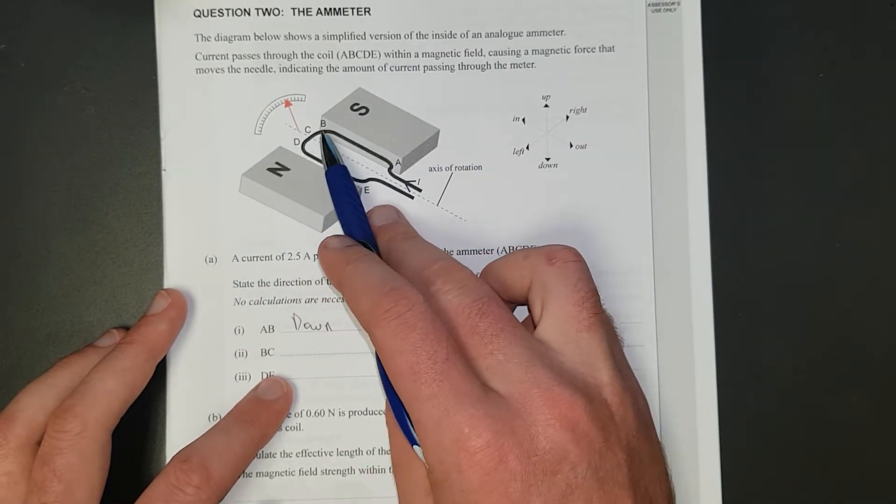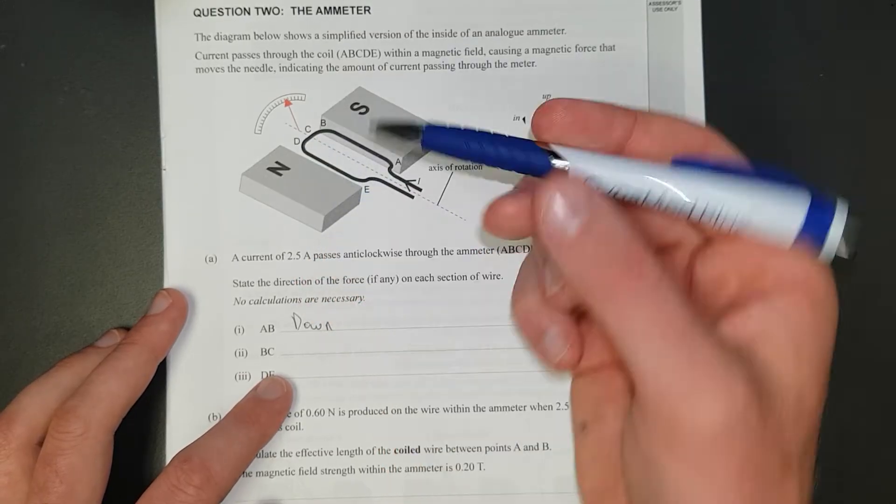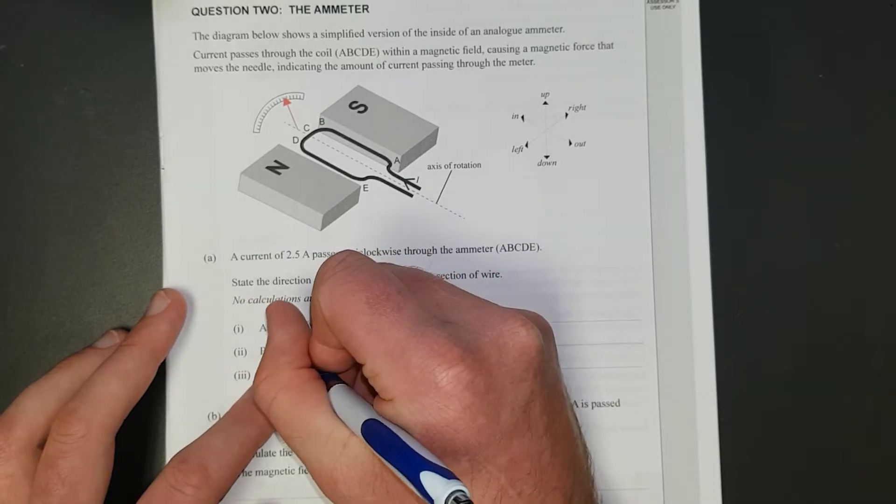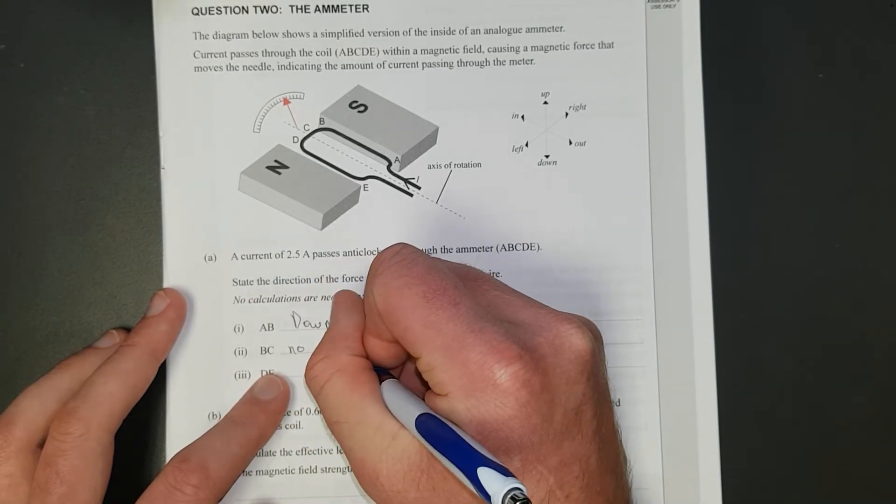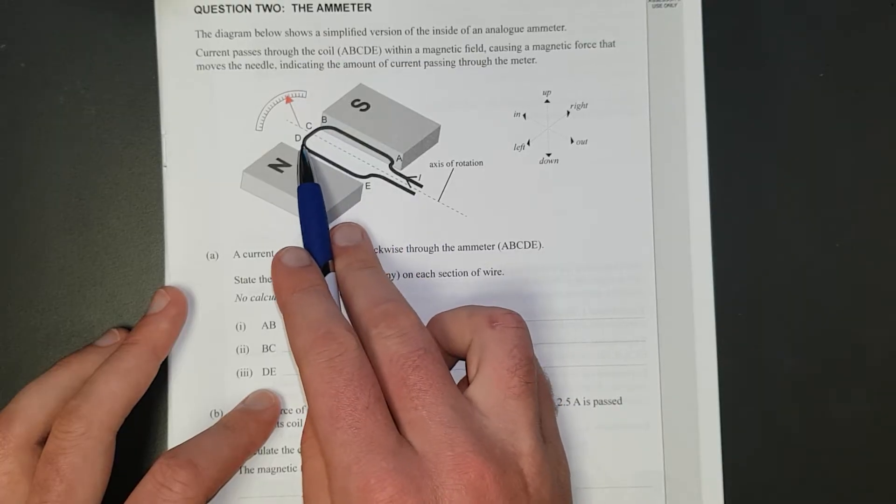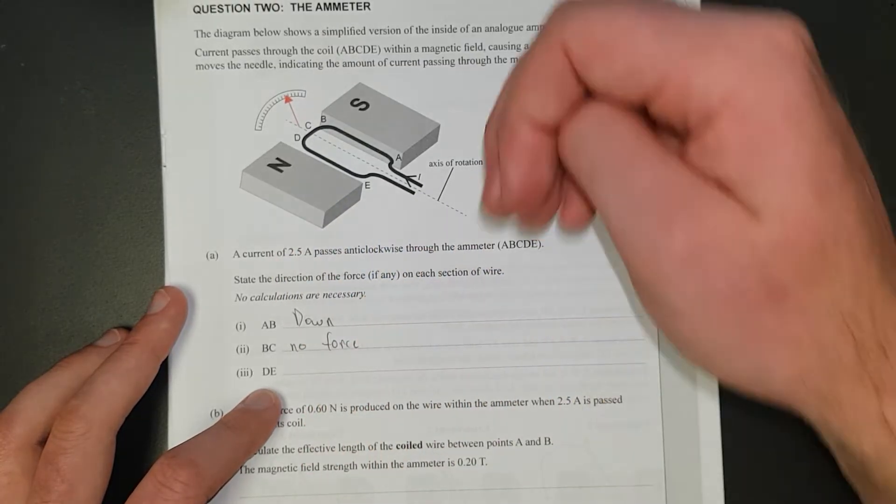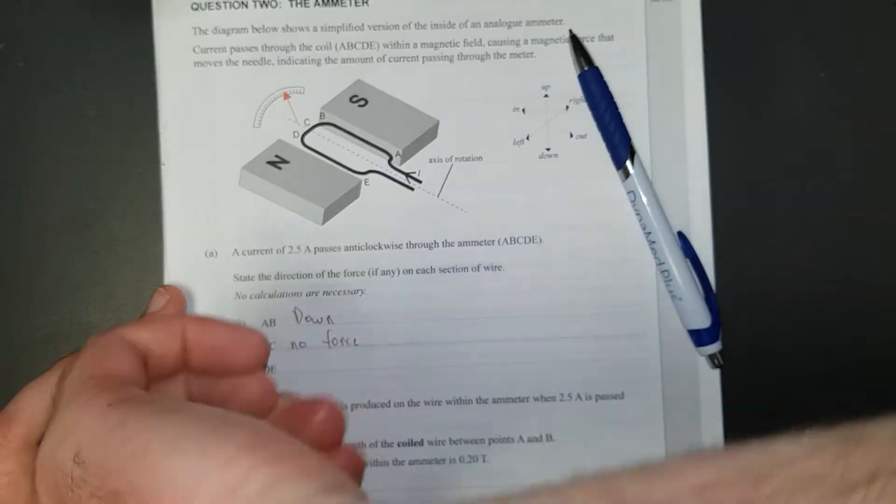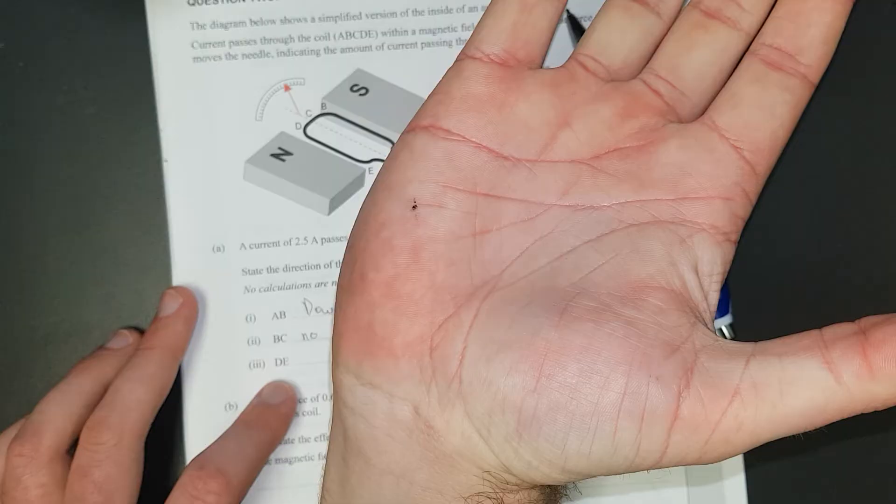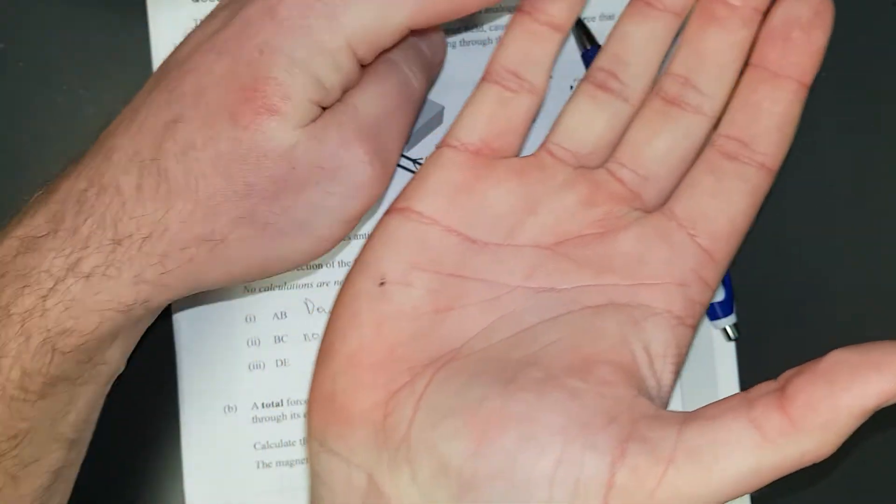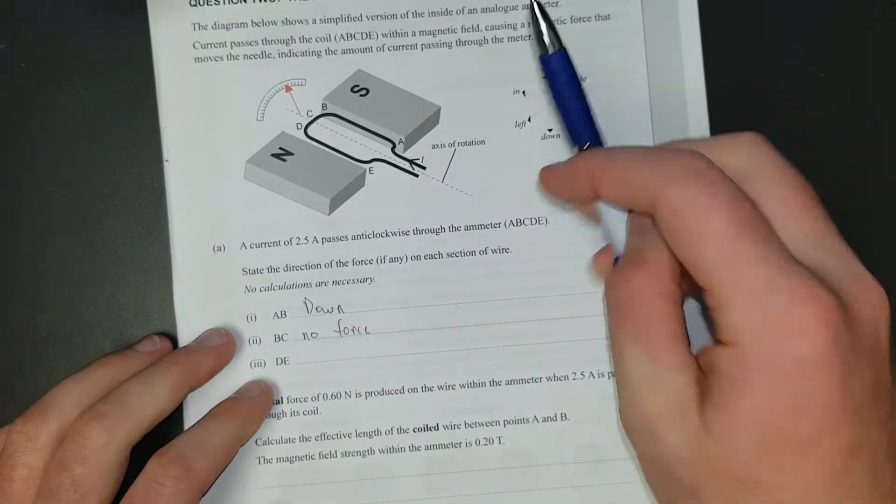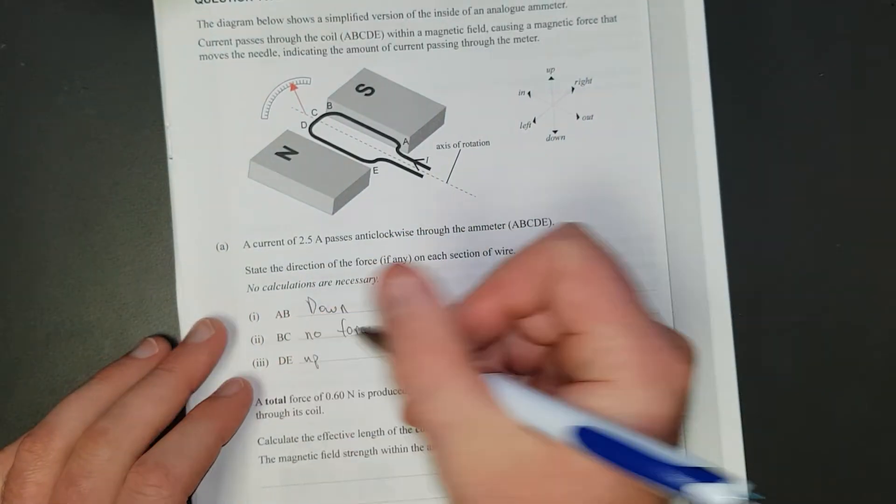BC, like I said before, north to south, these electrons are moving from B to D, they're parallel to the field, so there's going to be no force at all. And if AB was down, DE is literally the opposite situation. You've got the current going this way. Magnetic field's going from north to south. Current's going sort of that way. This guy's going from D to E, so it's going to be up. Sweet. Easy peasy.